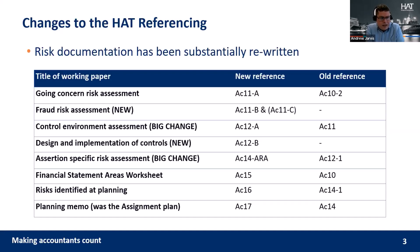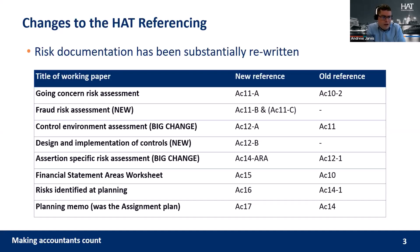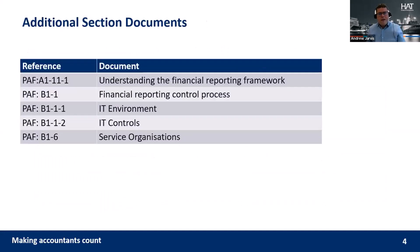We then look at materiality, and then the individual area risk assessment or assertion risk assessment at AC14, which I'll look at in more detail in a moment. That feeds into the financial statement areas worksheet. The workflow there is now much better - instead of having the FSA at the start of the planning, it's now providing the ROI with an executive summary of the risk levels, completed after the rest of the risk documentation. AC16 is a summary of our key and significant risks and then the assignment plan.